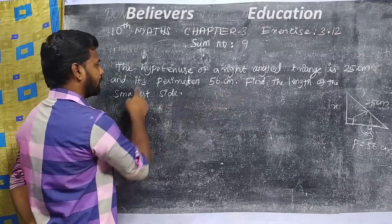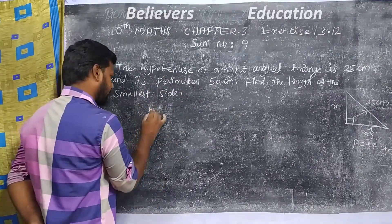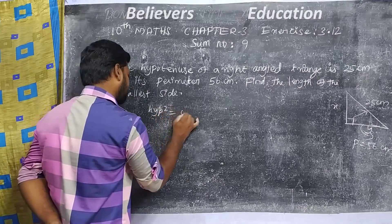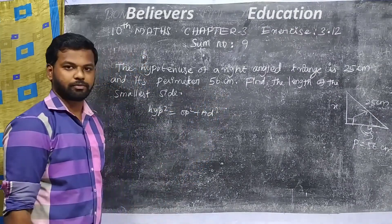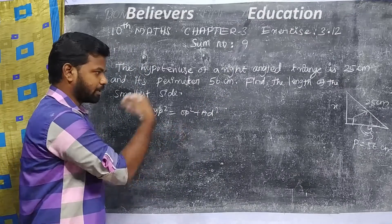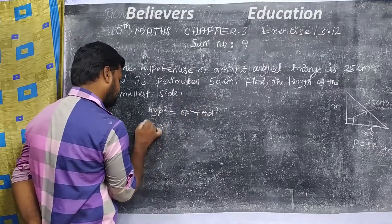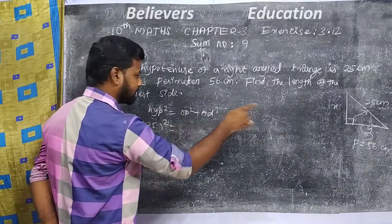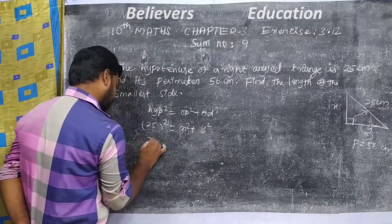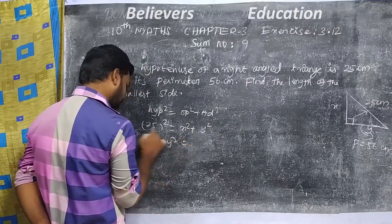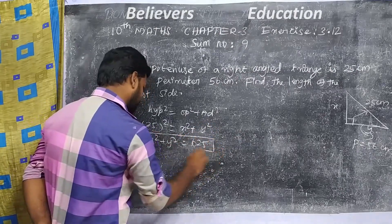Looking at the right angle triangle, the hypotenuse formula says: hypotenuse squared is equal to opposite squared plus adjacent squared. We use the Pythagorean theorem to solve this. So 25 squared is equal to x squared plus y squared. Therefore, x squared plus y squared equals 625. This is the first condition.